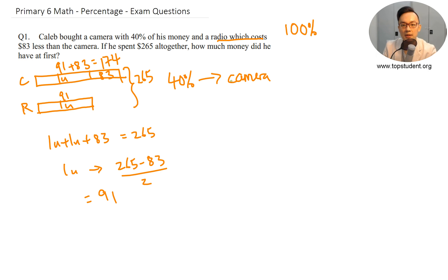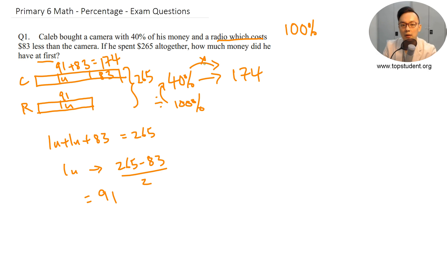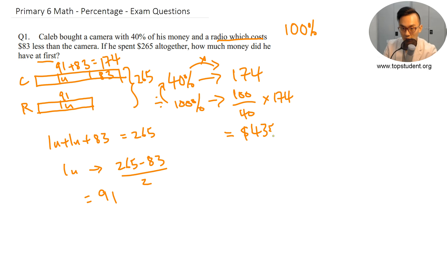So my 40% went to the camera. The camera is $174, so 40% is actually $174. How much money did he have at first? At first it's 100%. So using divide times: 100 divided by 40 times 174 equals $435.